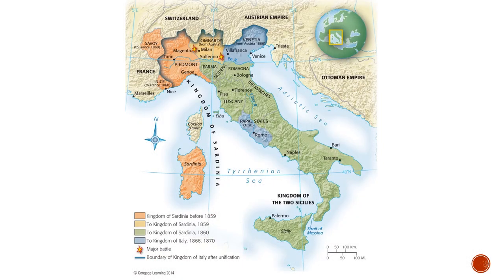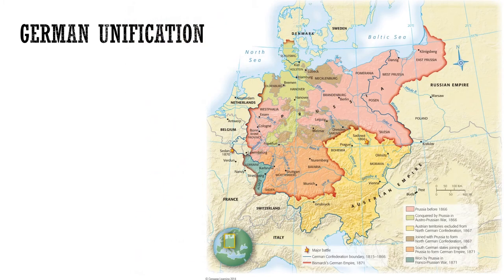Here you see a map of united Italy. Missing from the initial country were the Papal States, which wouldn't be added until 1870, and Venetia, which they wouldn't finally get from Austria until 1866 — when Austria was dealing with German unification at the same time. But basically from 1860 onward, we now have a country of Italy.